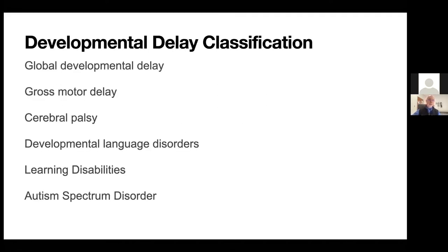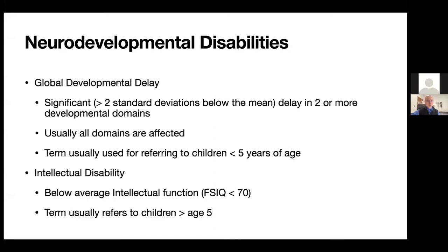The main categories we think about when we see children in our clinic who have a developmental delay include global developmental delay, gross motor delay, and cerebral palsy, among others. We'll go into these categories individually.